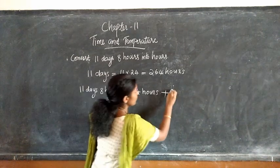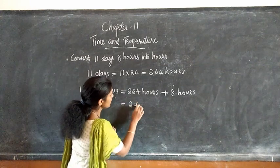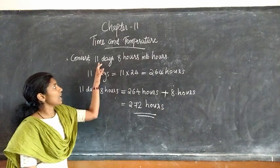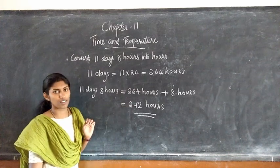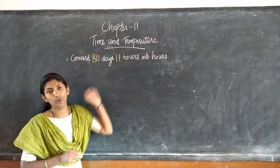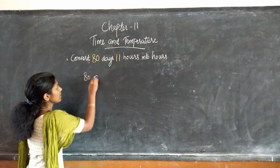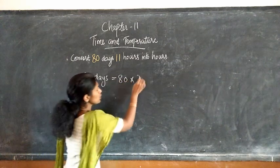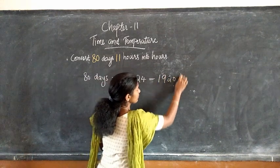We have 11 days 8 hours, and we have to convert 11 days 8 hours into hours. For that, 11 days equal to 264 hours. So 264 hours plus 8 hours, that is equal to 272 hours. That means 11 days 8 hours is equal to 272 hours.